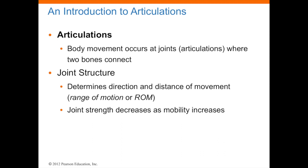Articulations are any body movement occurring at the joints, where two bones connect. The joint structure determines the direction and the distance of movement, or ROM, range of motion. The joint strength decreases as mobility increases — so the more movement a joint allows, the more it is prone to injury. If you think of a baseball player when they throw or pitch a ball, your shoulder has the greatest range of motion. But unfortunately, over time and over repetitive stress, it can damage a joint. Remember, the more movement that occurs at a joint, the more injury-prone situations can occur.